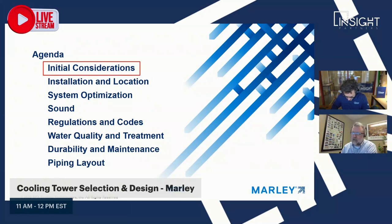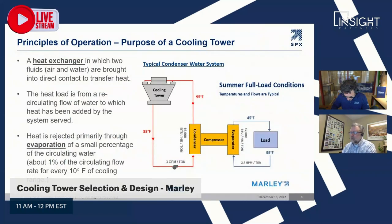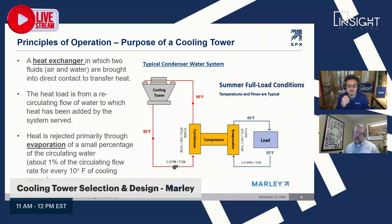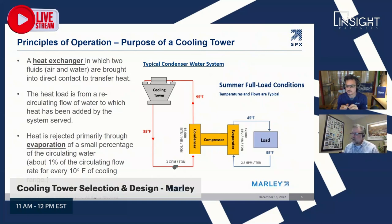Let's cover a little bit of fundamentals. What is a cooling tower? It is a heat exchanger — a unique one in that it's a direct heat exchanger where the two fluids are brought into direct contact with one another. We reject heat from the process primarily through evaporation. About 1% of the circulating flow rate is evaporated for every 10 degrees of range. We have a typical condenser water system where the building load gets sent out to the cooling tower and we reject that heat.